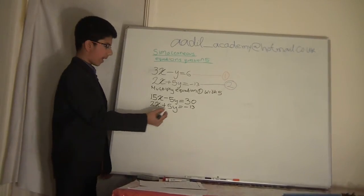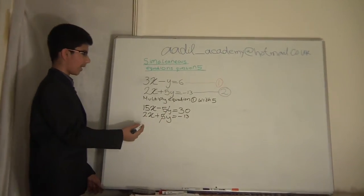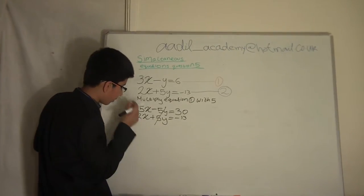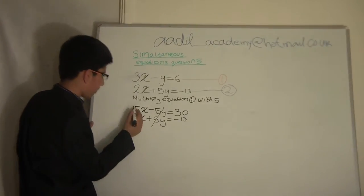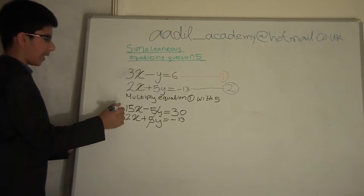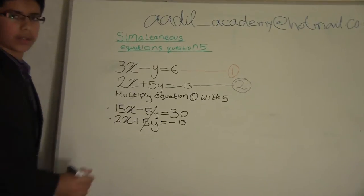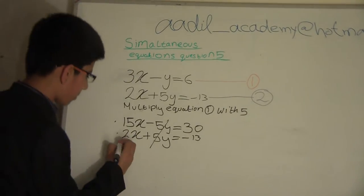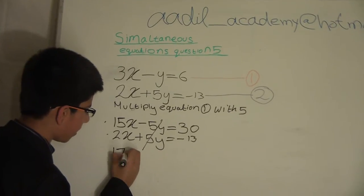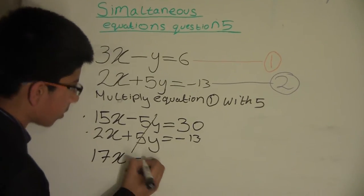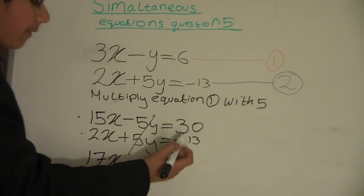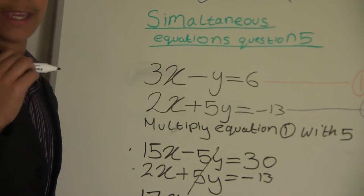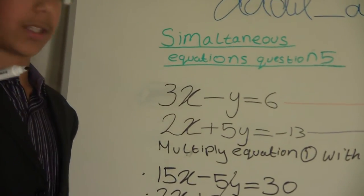We will cancel the two y's, which leaves us with the x terms and the numbers. When we add 15x and 2x we will get 17x, so we will write 17x equals 30 plus bracket minus 13.